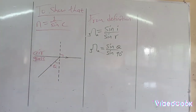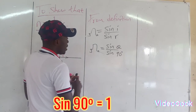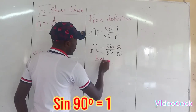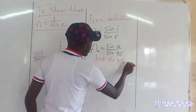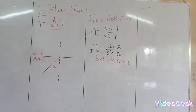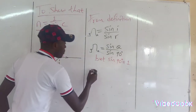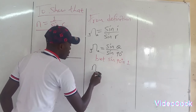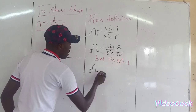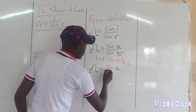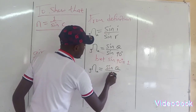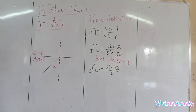The angle of refraction here is 90 degrees. And we all know that sine 90 degrees from the calculator will give you one. So that means the refractive index of air with reference to glass is given by sine theta divided by one, which equals sine theta.